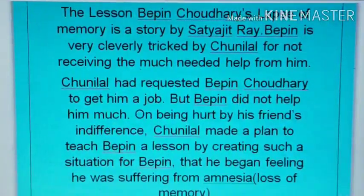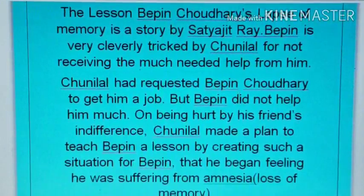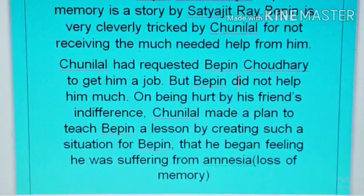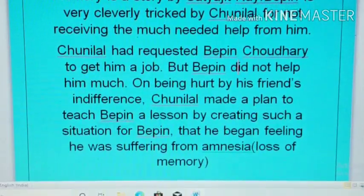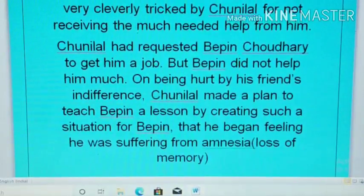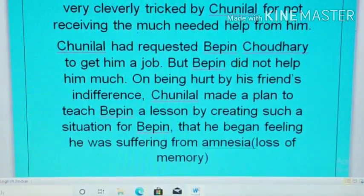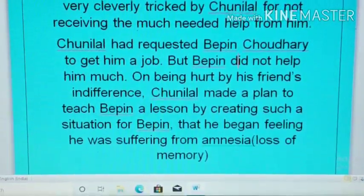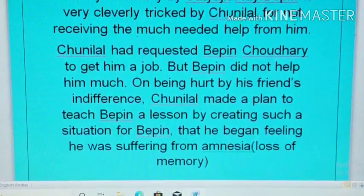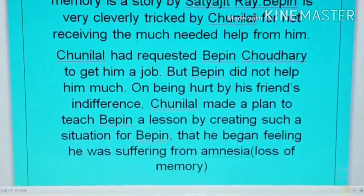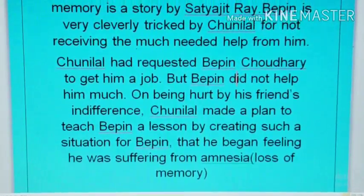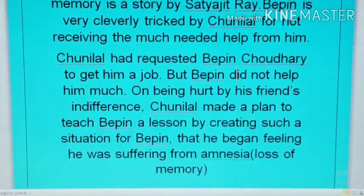The lesson 'Vibin Chautry's Lapse of Memory' is a story by Satyajit Ray. Vibin is very cleverly tricked by Chunilal for not receiving much needed help from him. Chunilal had requested Vibin Chaudry to get him a job, but Vibin did not help him much. On being hurt by his friend's indifference, Chunilal made a plan to teach Vibin a lesson by creating a situation where Vibin began feeling he was suffering from amnesia — amnesia means loss of memory.